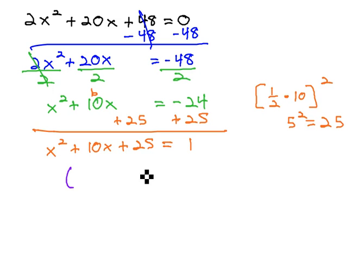This generates a situation where we can factor the left side to a perfect square. Taking the square root of the first term, the sign from the middle, and the square root of the last term, gives us x plus 5 squared equals 1.